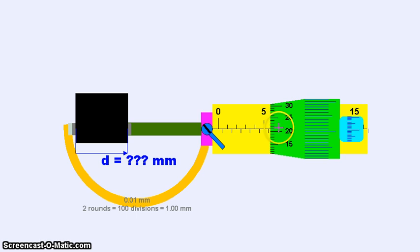So adding 0.21 mm to 5.5 mm, we will get 5.71 mm and that is how you read a micrometer screw gauge.